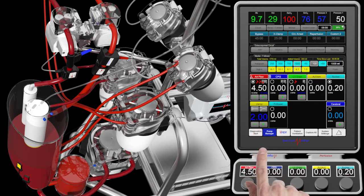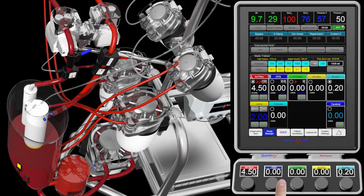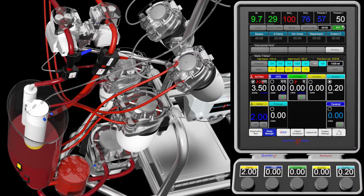This user begins weaning by decreasing venous return. Touching the weaning button adjusts both flow rates to the current lowest flow rate.